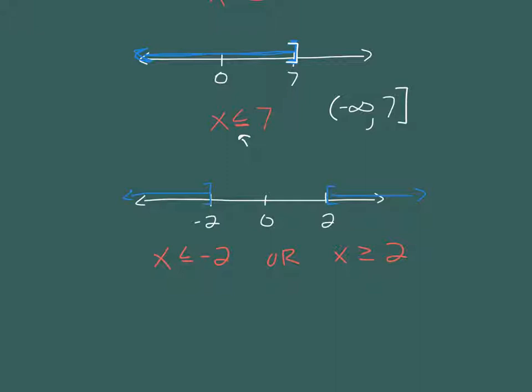They can't be combined into one. The interval notation for this would be following the rules above, negative infinity to negative 2, including negative 2. You can't include infinity. And over here, we have 2 to infinity. And again, the bracket around the 2 because of the bracket above.